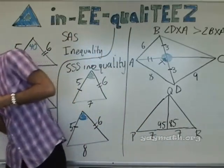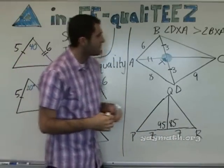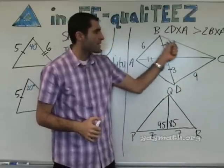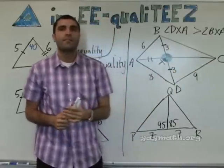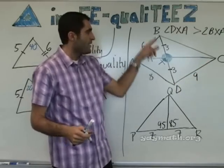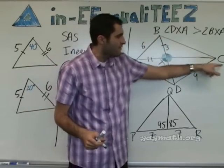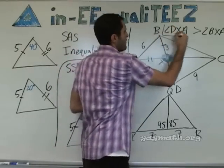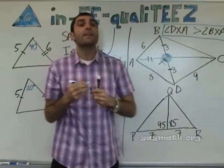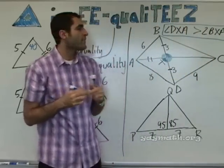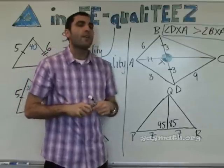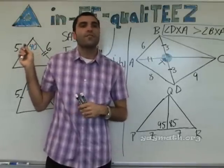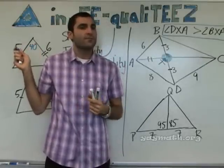Next question — BXA and DXA as sides. This line versus this line. Which one's bigger — BXA or DXA? Do they first have two sides congruent? Yes. What are the two sides that are congruent? CX is reflexive, and then the three and the three.